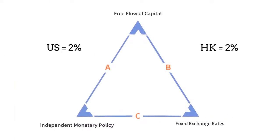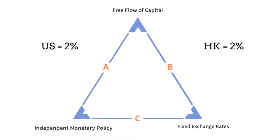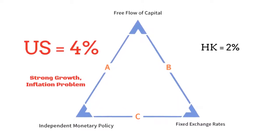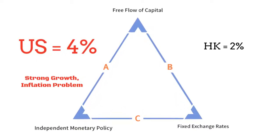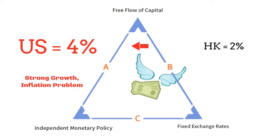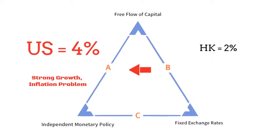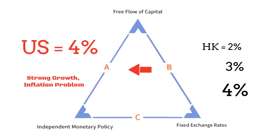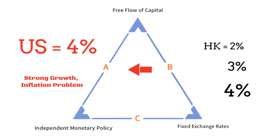Suppose we start with both the interest rates in the US and in Hong Kong at 2%. Suppose the US economy became stronger and inflationary — the Federal Reserve would have to raise interest rates, say, to 4%. If the Hong Kong Monetary Authority wished to keep interest rates in Hong Kong at 2%, then capital will flow out of Hong Kong into the US to capture the higher interest rates. As capital continues to flow out, the money supply in Hong Kong will shrink and interest rates will go up until they are as high as in the US.